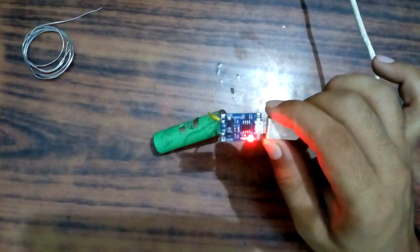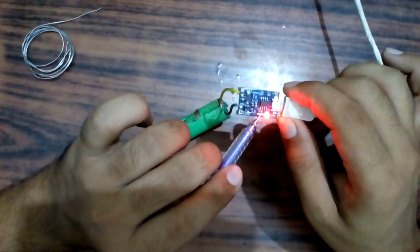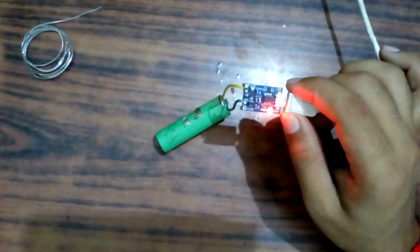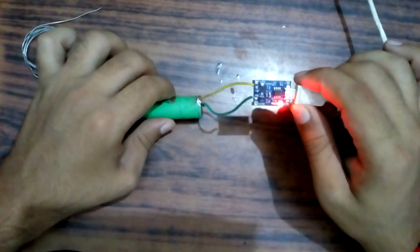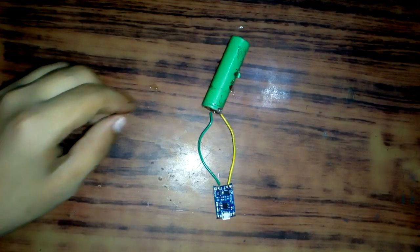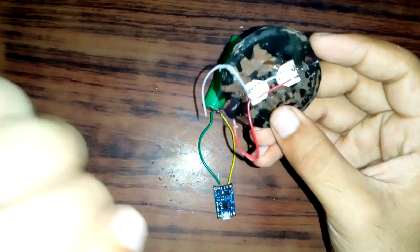When this fully charges the cell, the green LED will glow and indicate that your cell is fully charged and automatically cut off the charging process. Now let's connect a load to it.